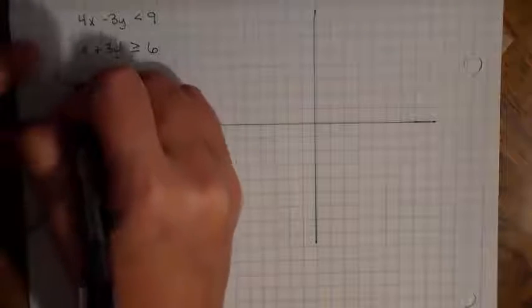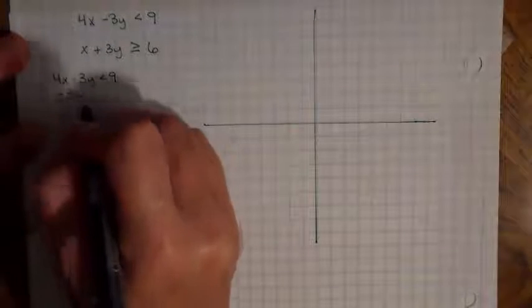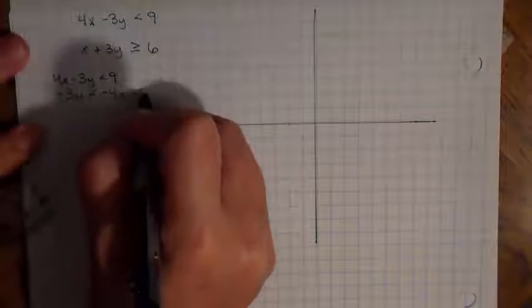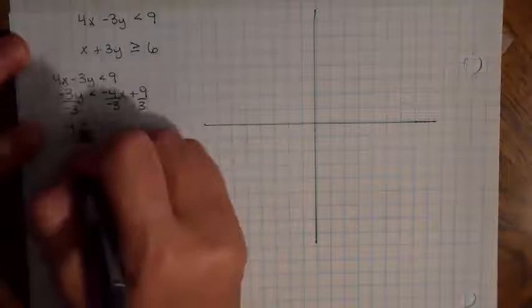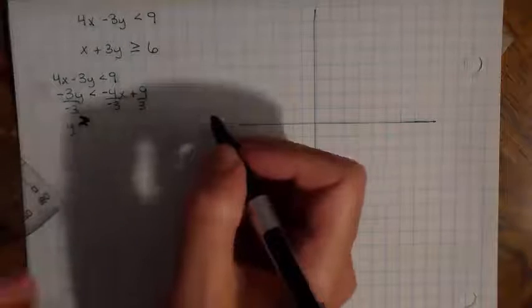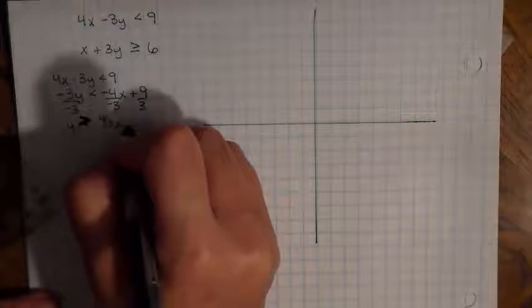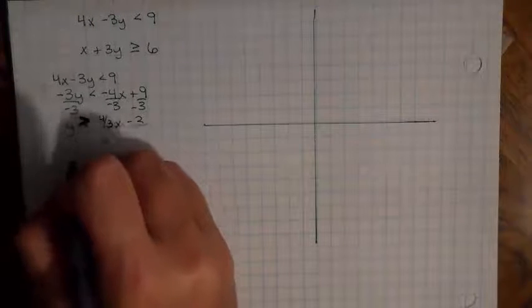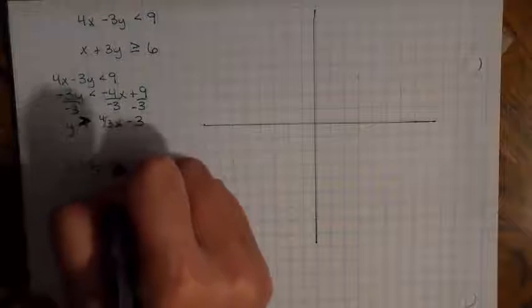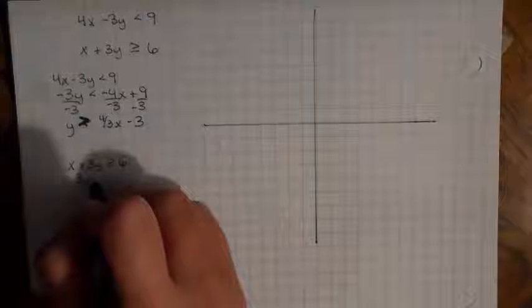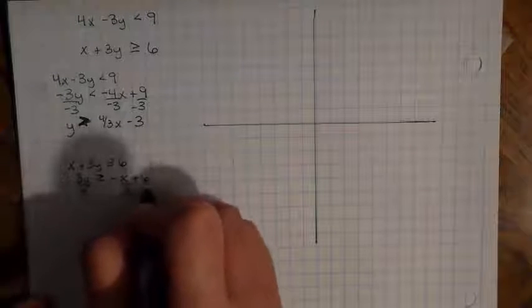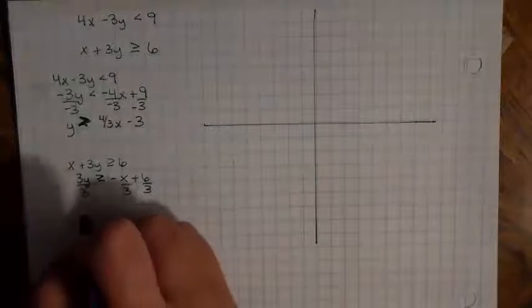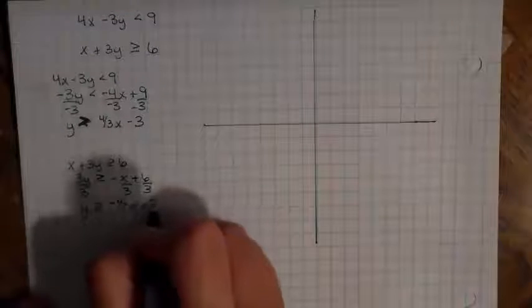So 4x minus 3y is less than 9. Moving the x over, I get negative 3y is less than negative 4x plus 9. Dividing everything by negative 3 — and don't forget to flip the inequality when you divide by a negative — I get y is greater than four-thirds x minus 3. For the other equation, x plus 3y is greater than or equal to 6. Moving x, I get 3y is greater than or equal to negative x plus 6. Dividing by positive 3, I get y is greater than or equal to negative one-third x plus 2.